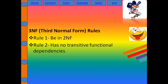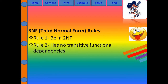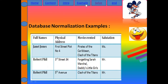For Third NF, you must be in Second NF — without Second NF, you cannot do Third NF, so it's mandatory. The key requirement of Third NF is that there is no transitive functional dependency. A transitive functional dependency occurs when changing a non-key column might cause another non-key column to change. Non-key columns are columns in a table that are not used to uniquely identify a record. In my example, full name and salutation are non-key columns.